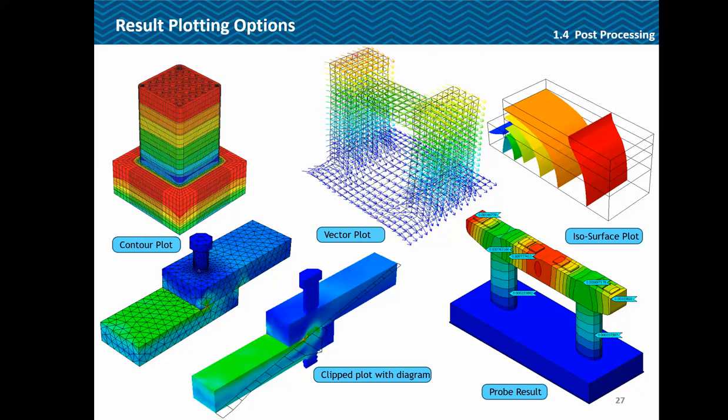This is how a few of those plots look — the contour plot, the vector plot, ISO surface plots, and the clip plot with diagrams. You can obtain the variation in values along any particular line in any plot and probe the result at various locations.